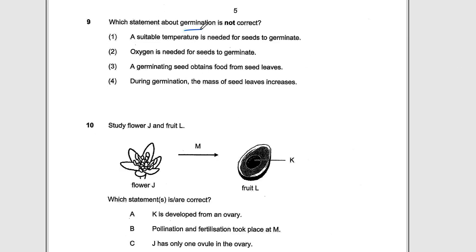Question number nine. Which statement about germination is not correct? Immediately when you think of germination, think of the letters WOW. You need water, oxygen and warmth. So not correct. A suitable temperature is needed for seeds to germinate - yes, we need warmth. Oxygen is needed - yes. A germinating seed obtains food from the seed leaves - yes, this is true. This is the stored food. So as the seed is growing, the seed leaf is going to shrivel and eventually drop off. So the mass of the seed leaves is actually going to go down. During germination, the mass of seed leaves increases. This is wrong. The young plant is going to gain mass until the true leaves appear. And then the true leaves photosynthesize. So the seed leaves will, as the plant grows, the seed leaf will just decrease in mass. It will not go zero, but it will just eventually drop off. So the answer is number four.